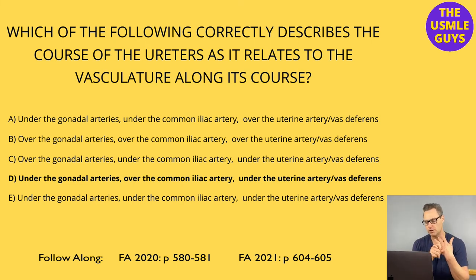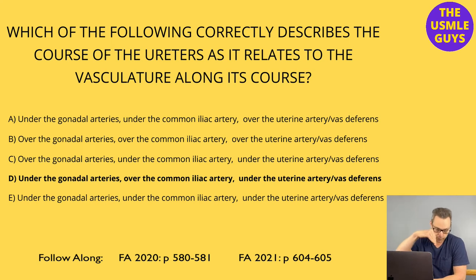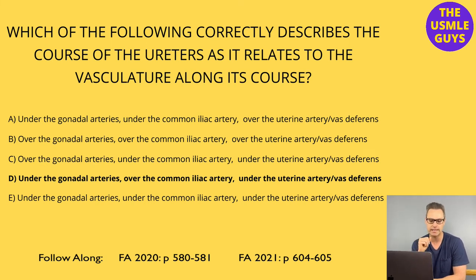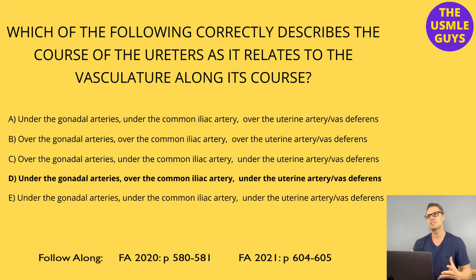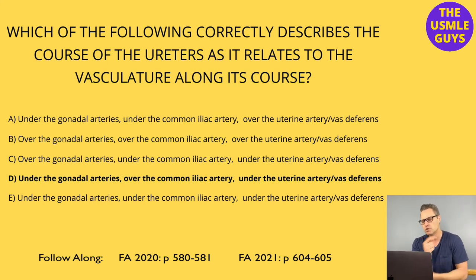Remember, the ureter arises from the renal pelvis. From there, it travels under the gonadal arteries, then over the common iliac artery, then under the uterine artery or vas deferens retroperitoneally. So remember: under the gonadals, over the common iliac, then under the uterine artery or vas. Knowing the three common points of obstruction along the path of the ureter is also very important — it allows us to pinpoint where something could go wrong.